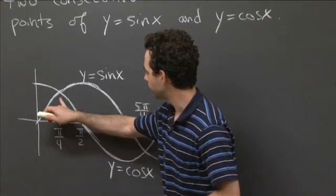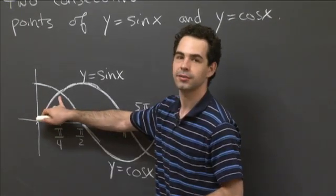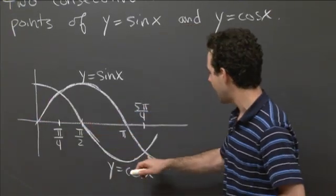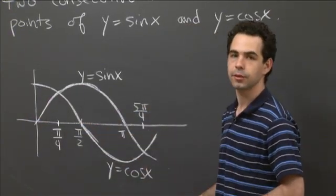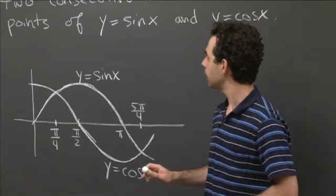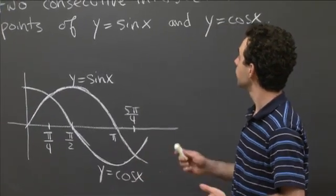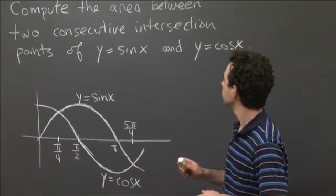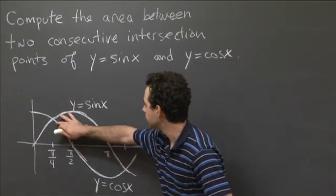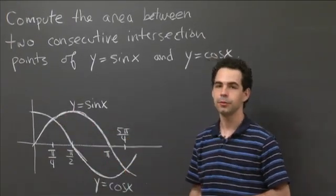At π over 4, we have sine π over 4 equals cosine π over 4. And at 5π over 4, they're also equal again, down in the third quadrant there. So the question is to compute the area of this region that they bound between those two points.